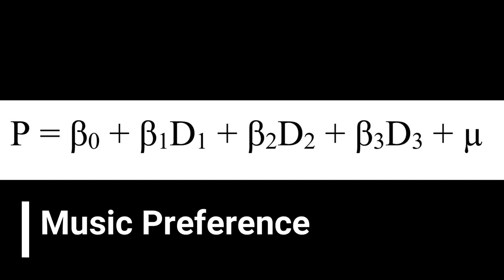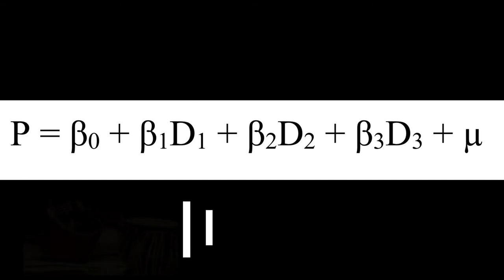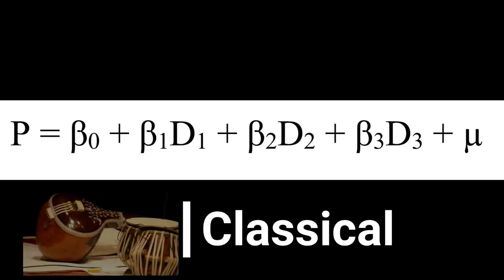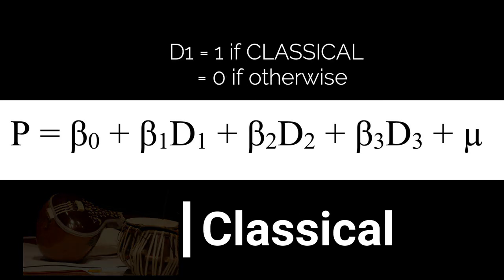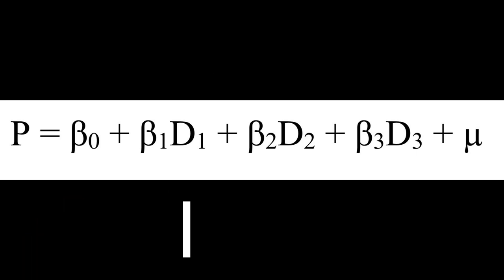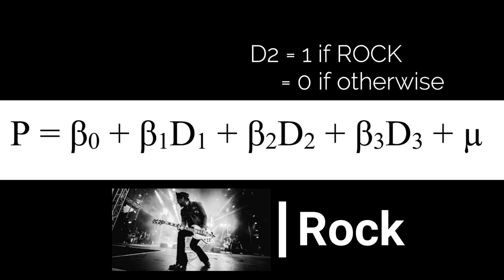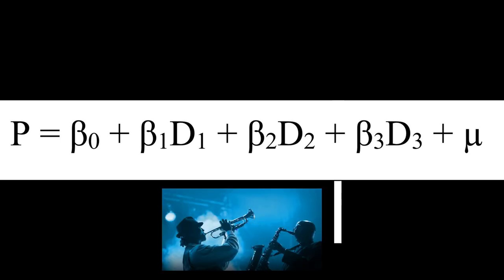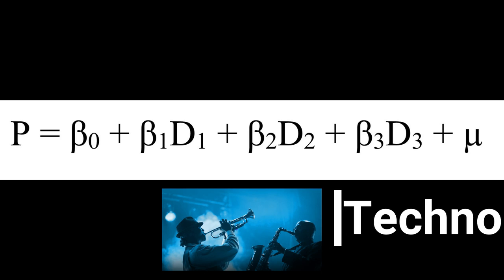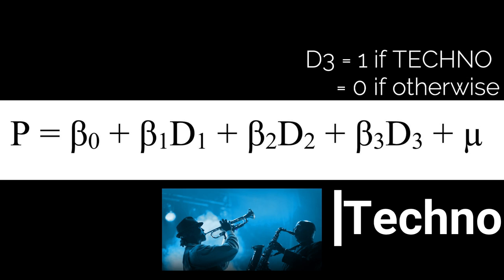Here P is our music preference. D₁ is classical music, so D₁ is 1 if it's classical music and 0 if otherwise. We've taken D₂ as rock music. So D₂ is 1 if it's rock music and 0 if otherwise. And D₃ is techno music. D₃ is 1 if the person prefers techno and 0 if otherwise.